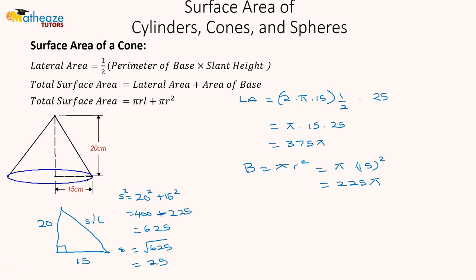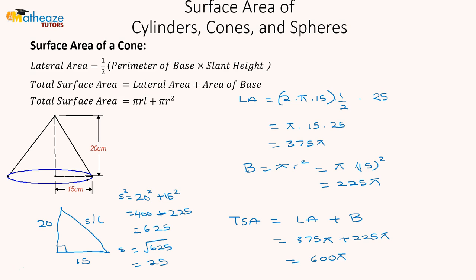Therefore, the total surface area is lateral area plus area of the base, which is 375π plus 225π, giving us 600π.